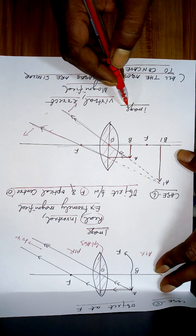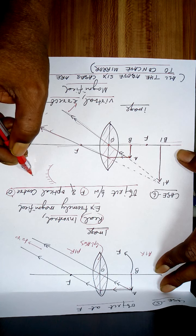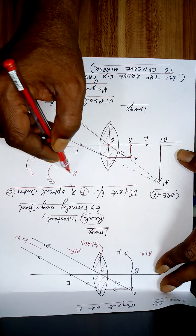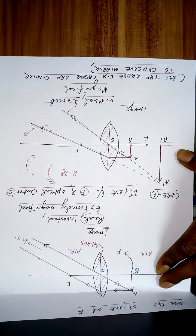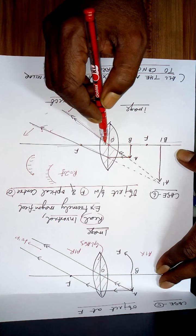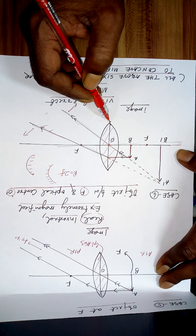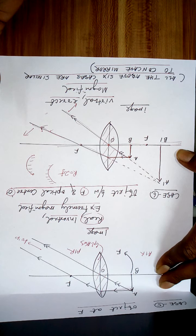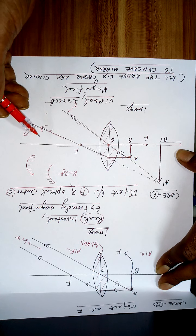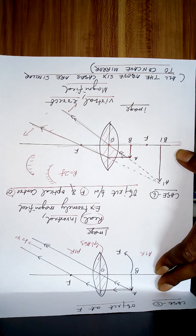All six cases are similar to those of a concave mirror. However, one important difference: for a mirror we proved R = 2f, but for a lens, 2f is not equal to the radius of curvature. We will derive a separate formula relating R, f, and the refractive index of the lens.